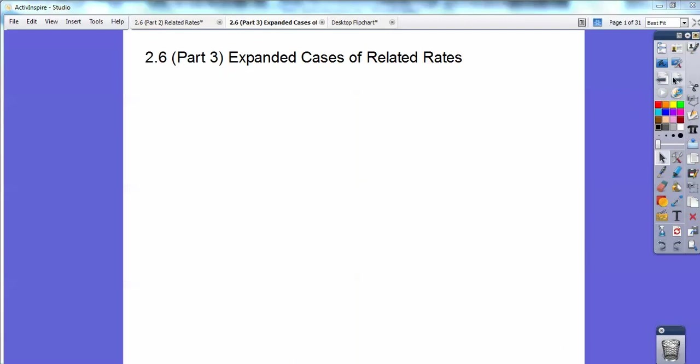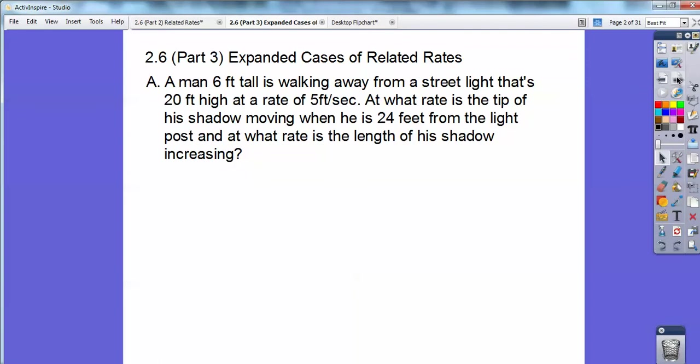Here we're going to have a fish being reeled in, some other ones, and the lighthouse one, the infamous lighthouse one. So a street lamp and a shadow. This is in every calculus book in one form or another, you guys.